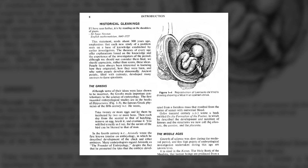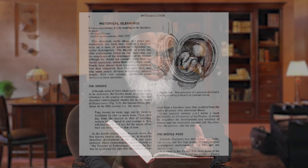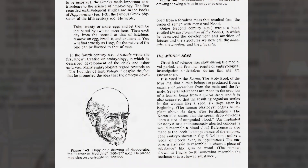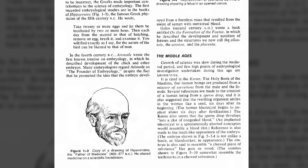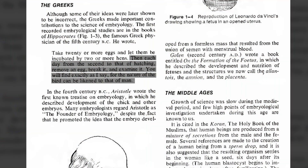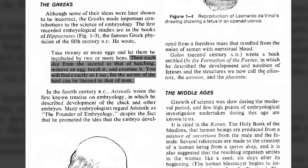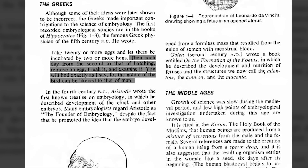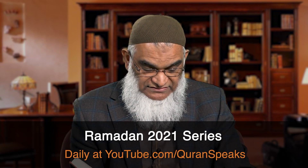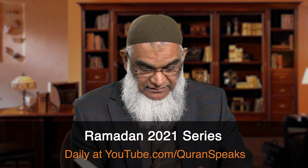Looking at page eight of Dr. Keith Moore's original work, which gives us some historical gleanings, he tells us that a long time ago people did not have the detailed knowledge we have now of embryology. He points out that the famous Greek physician of the fifth century BC, Hippocrates, wrote: 'Take 20 or more eggs and let them be incubated by two or more hens. Then each day from the second to that of hatching, remove an egg, break it, and examine it. You will find exactly as I say, for the nature of the bird can be likened to that of man.' These were the earliest studies done in embryology in history.